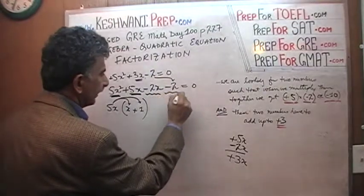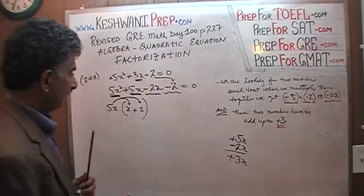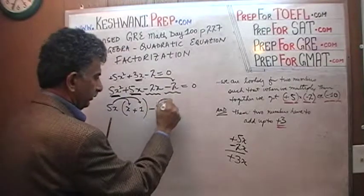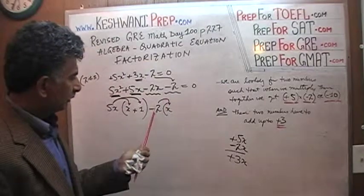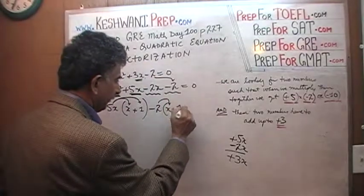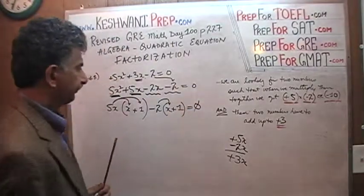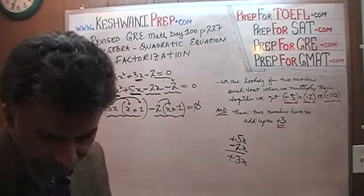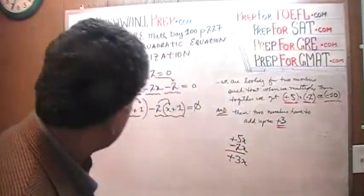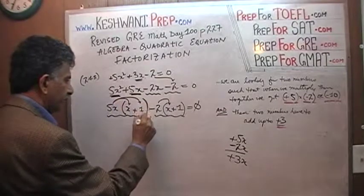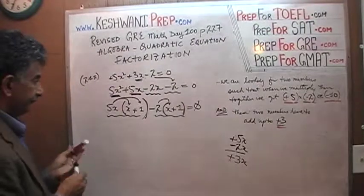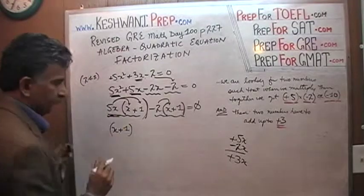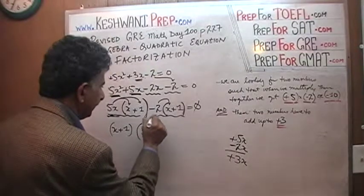Moving to the last two terms — the third and fourth — I see a common factor of negative 2. If we take out negative 2, we are left with x from the third term and positive 1 from the fourth term, since negative 2 times 1 gives negative 2. So we now have 5x(x + 1) minus 2(x + 1) equals 0.